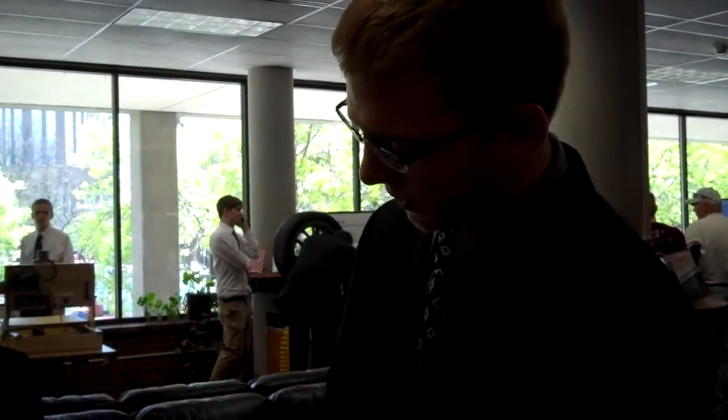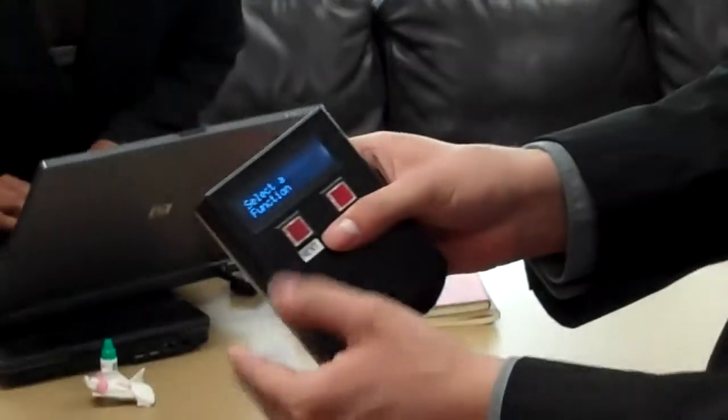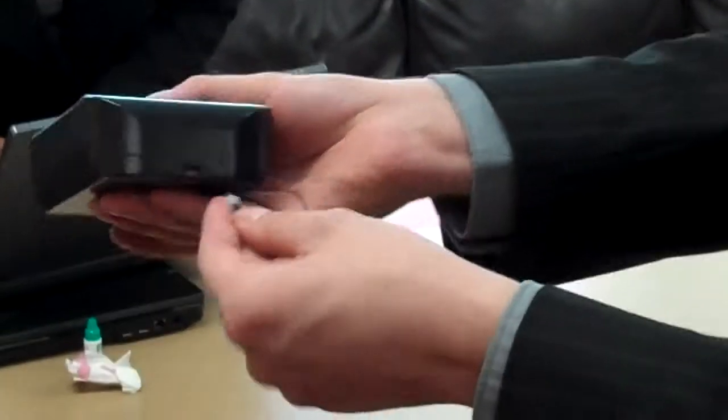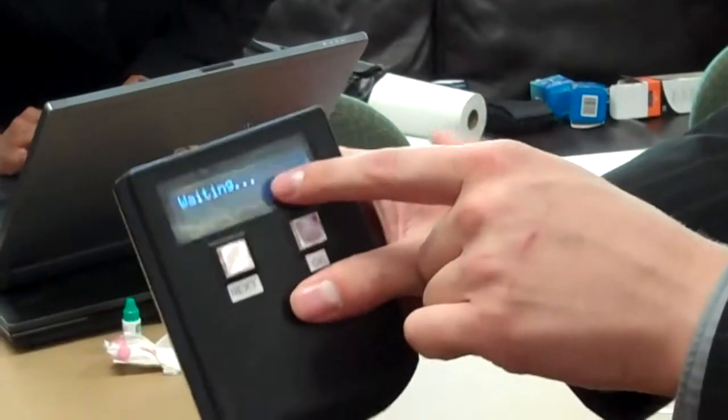So I'll start here. Turn it on. It says glucose reader and asks you to select a function. We'll go over to take readings, the first one. You can see it lights up down here. Strip in, hit OK, and now it's waiting for a sample.